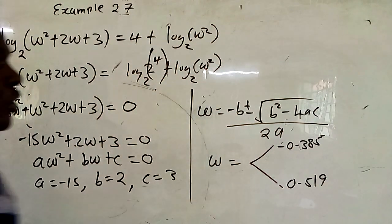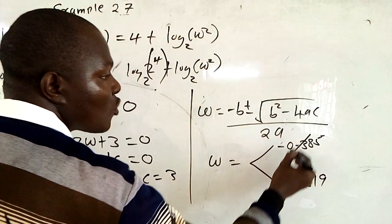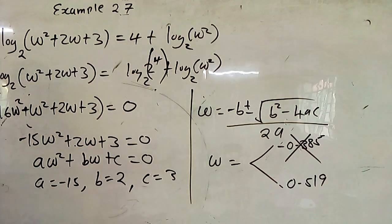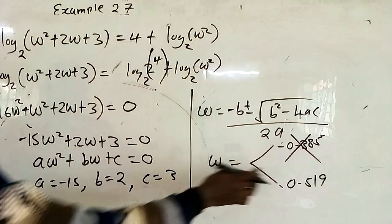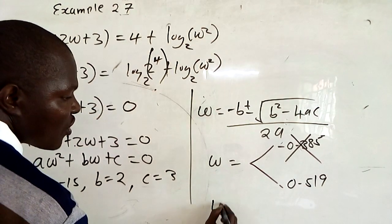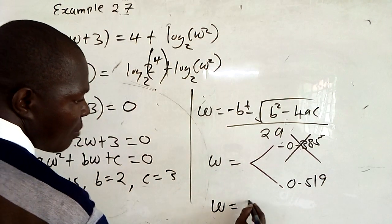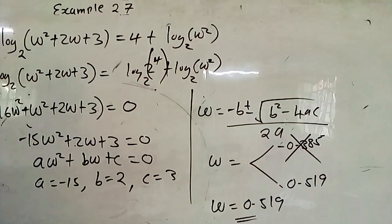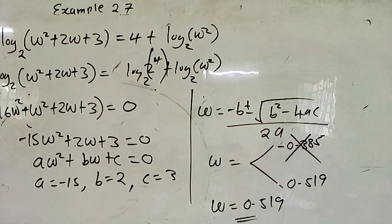The negative solution is rejected because the problem involves logarithms, so the positive solution is the answer. Therefore w is approximately 0.519, and you have solved the given problem. Confirm the values.